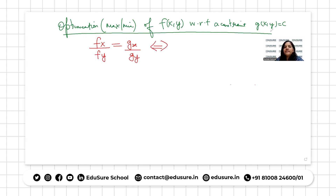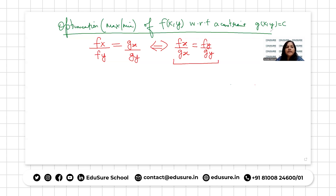We can equivalently write this as fx over gx equals fy over gy — that means these two ratios should be equal. Now, we can introduce a method known as the Lagrange multiplier method.